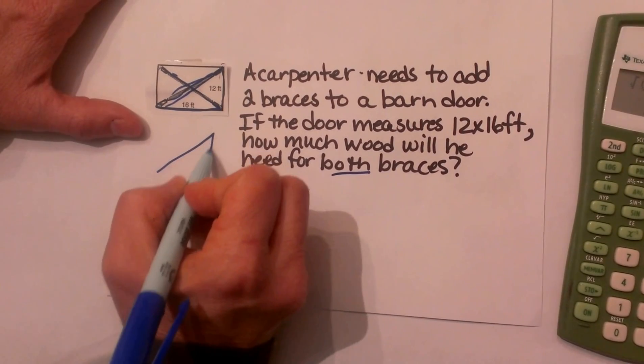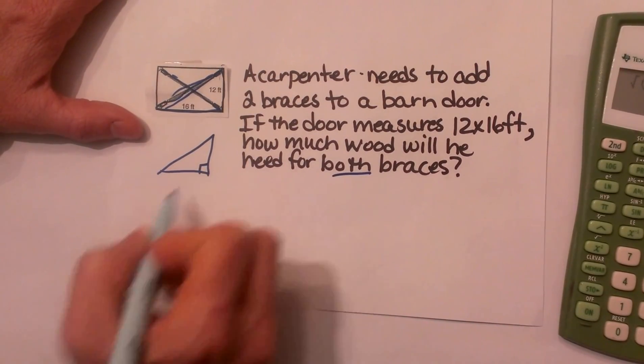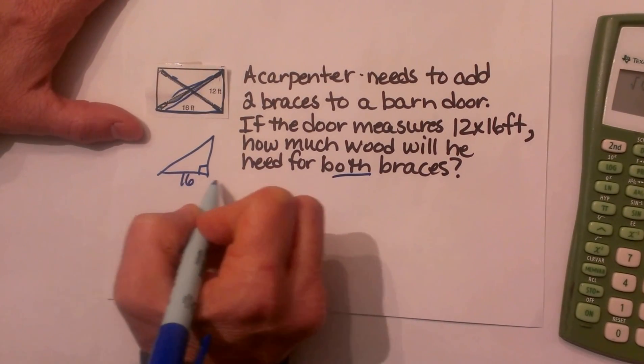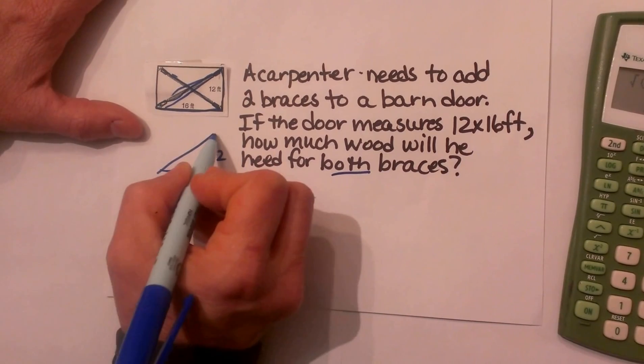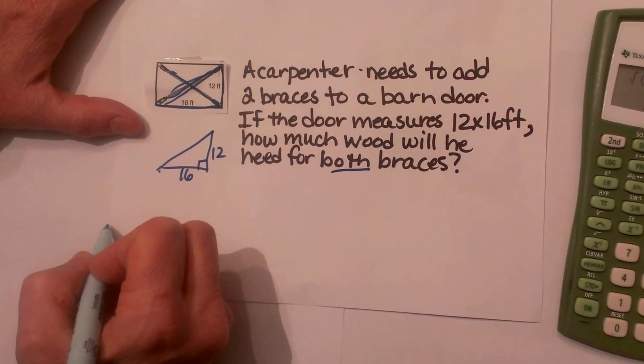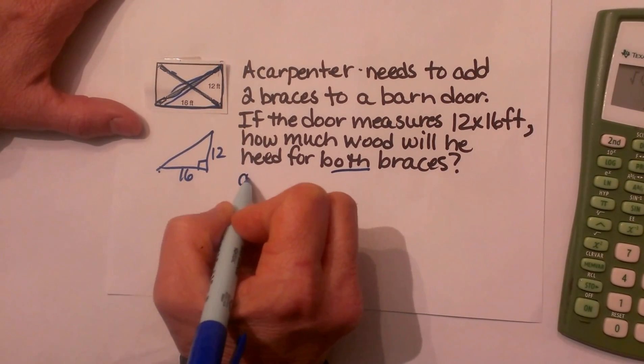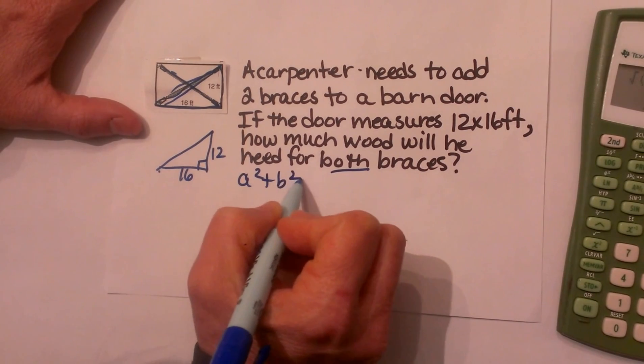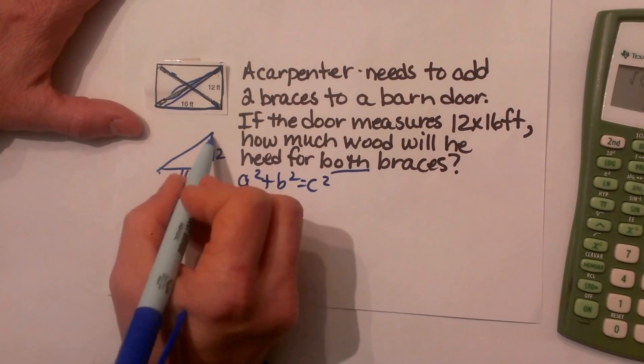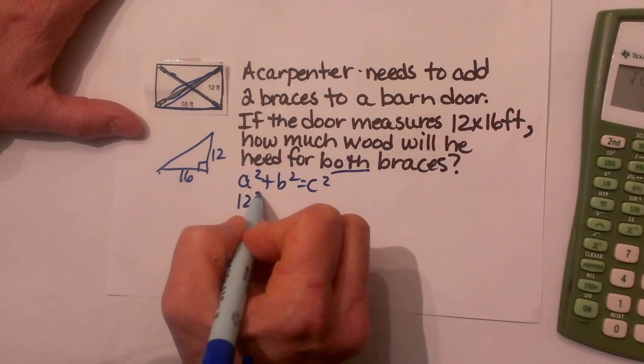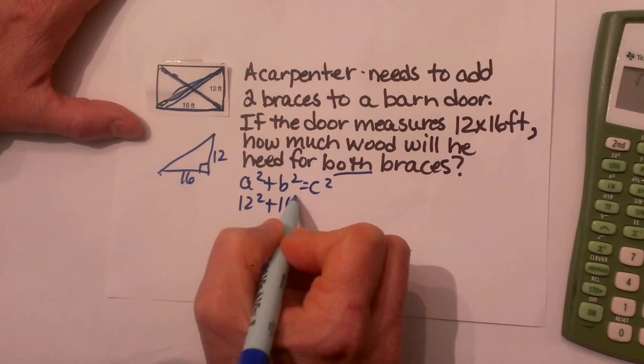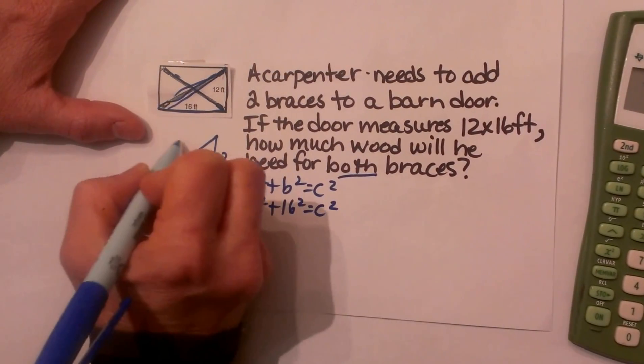So I am going to draw the triangle here and as you can see we have a right triangle with a base of 16 and a height of 12 so I need to know the hypotenuse or the longest side. So I am going to take my a² + b² = c². I am going to take my two legs and plug them in for a and b and my unknown is the hypotenuse c.